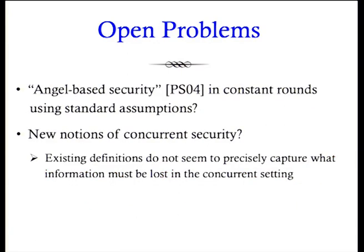Let me conclude with some open problems. In this work we only consider the original security definition of superpolynomial time simulation. There is a stronger notion called angel-based security, which provides better composition guarantees, introduced by Prabhakaran and Sahai. Our solution does not seem to extend immediately to this framework, so it would be interesting to get constant-round protocols using only standard assumptions even in this model. It would also be interesting to explore other notions of concurrent security, because the existing definitions do not really seem to precisely capture what information must be lost in the concurrent setting. Perhaps the right definition of concurrent security is still out there to be discovered.